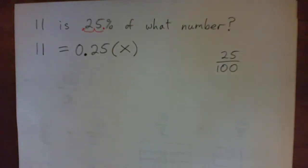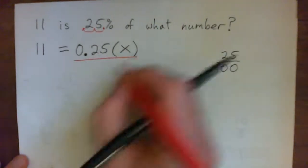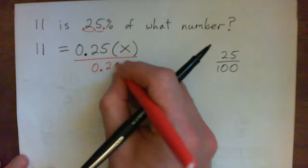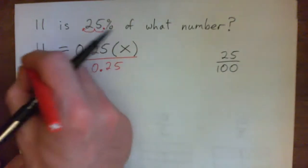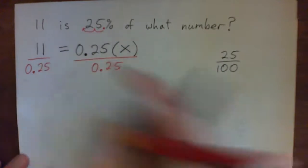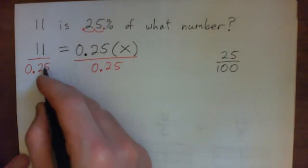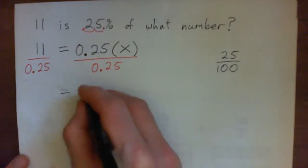So we have 11 equals 0.25 times X. So to get X on its own, we need to divide by 0.25. If we divide that side by 0.25, must divide this side by 0.25. And so now we have 11 over 0.25 equals X, because these guys cross cancel.